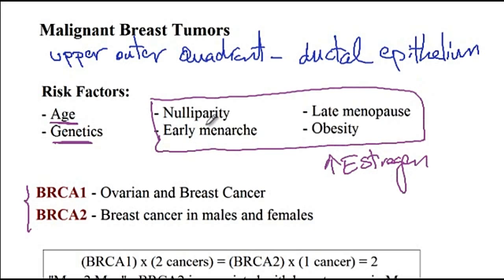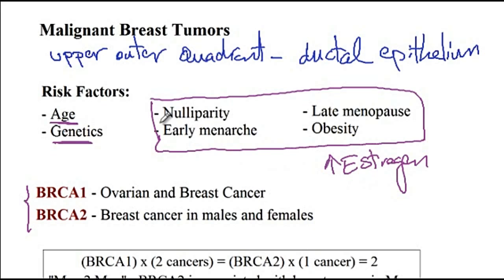With multiparity, increased progesterone levels during pregnancy cancel out the harmful effects of estrogen on the breast. Females who never get pregnant have higher estrogen levels without a counteracting progesterone effect and are at increased risk of breast cancer.